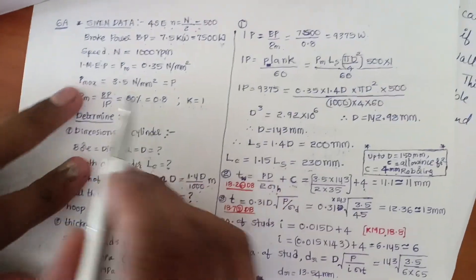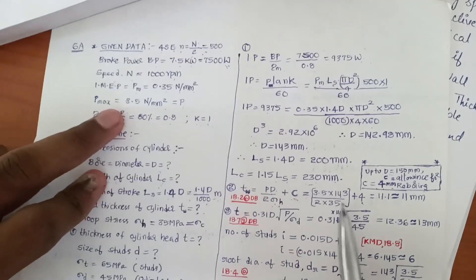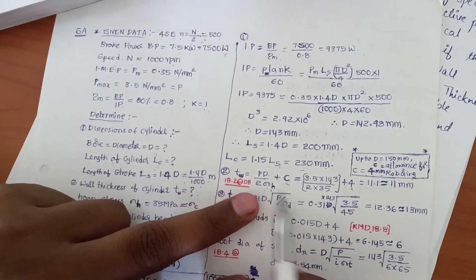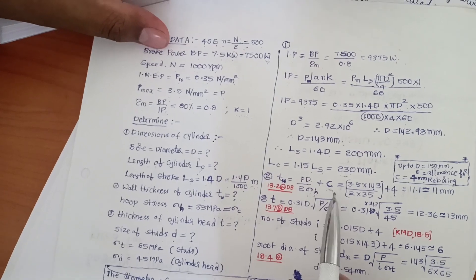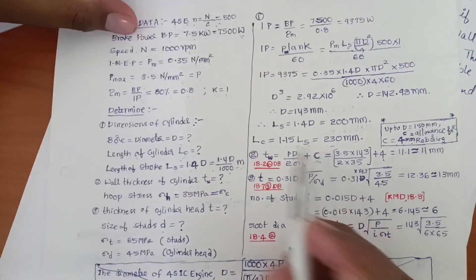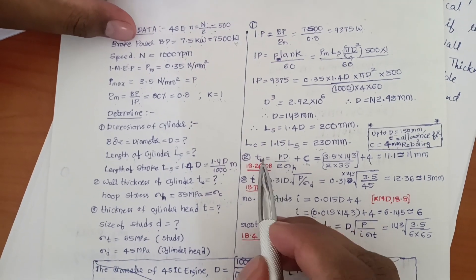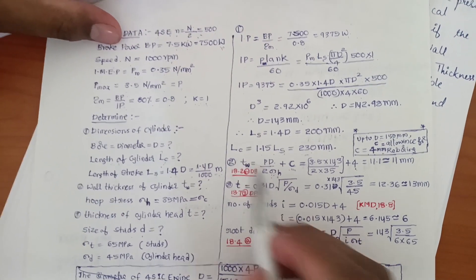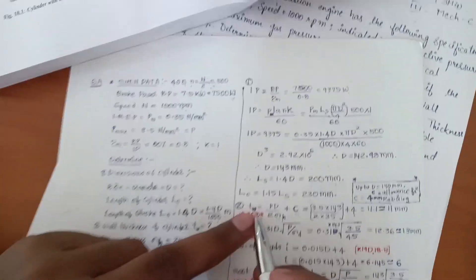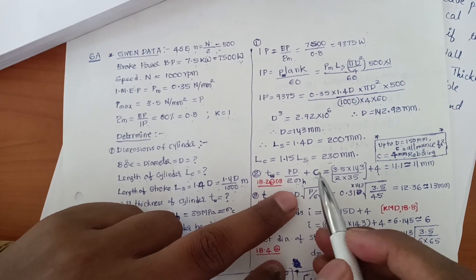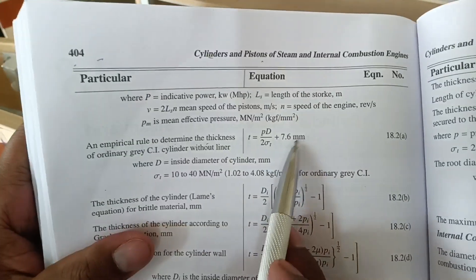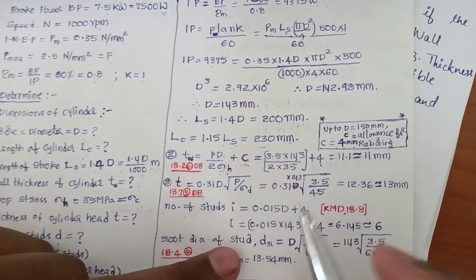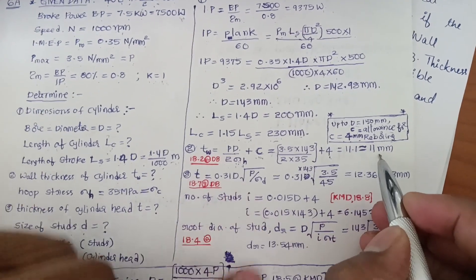Substituting: P is the maximum gas pressure 3.5 N/m², D is 143 mm, sigma_H is 35 MPa (given), and C equals 4 mm. This formula is derived from the thin cylinder formula sigma_H equals P × D / (2T). So T_W equals P × D / (2 × sigma_H) + C. After calculation, we get the wall thickness value.